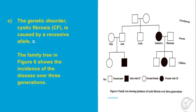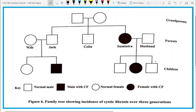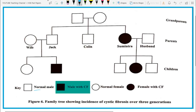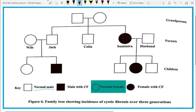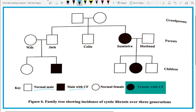Now let's look at Part C. The genetic disorder Cystic Fibrosis, CF, is caused by a recessive allele represented by lowercase c. The family tree in Figure 6 shows the incidence of the disease over three generations. Looking at the pedigree chart key: the unshaded square represents a normal male, the shaded square a male with CF, the unshaded circle a normal female, and the shaded circle a female with Cystic Fibrosis.